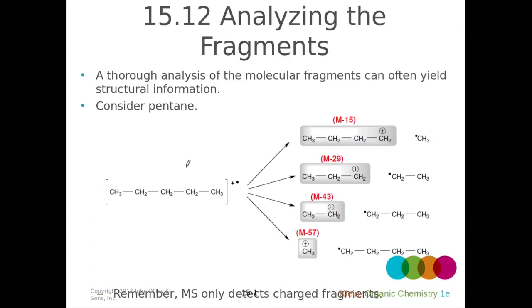We can get yet another piece of information from our mass spectrum. Consider pentane, which weighs 72 AMUs. In the GC-MS this is a high-energy situation in the gas phase, so the molecule is a radical cation that can fragment into both a radical and a cation. If it loses a methyl group, we're left with a butyl cation — so the M+• at 72 loses 15 AMUs for the methyl group (12+13+14+15), giving M−15.